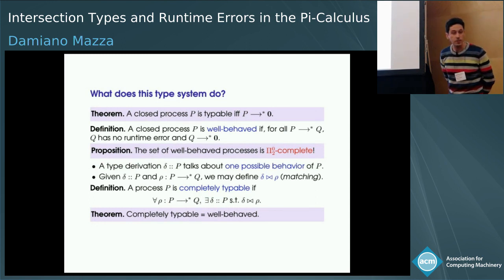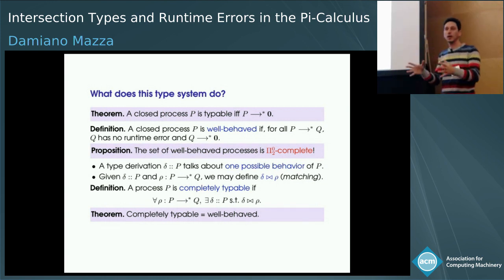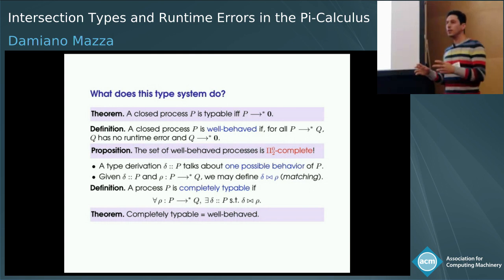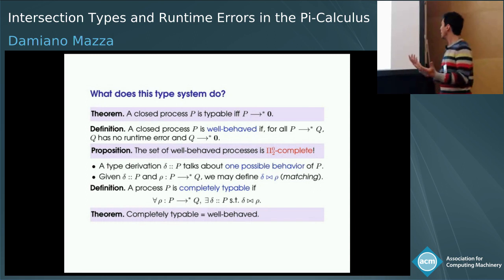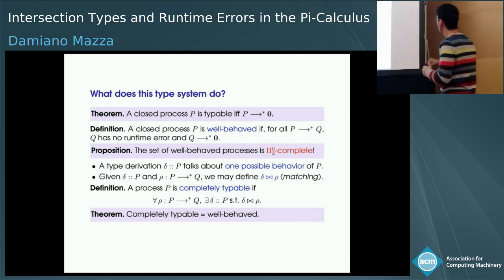So what does this type system do? By completely standard arguments — you have to do basically nothing — you have this theorem: this system exactly characterizes those processes — in the closed case, to make it easier to state — a closed process is typable if and only if it reduces to zero. Of course, you might object, and I would agree, that this is not a very interesting property in a concurrency setting, because if you have a process with millions of possible executions, what do you care that one of them goes well and terminates? It would be more interesting to consider a property like good behavior.